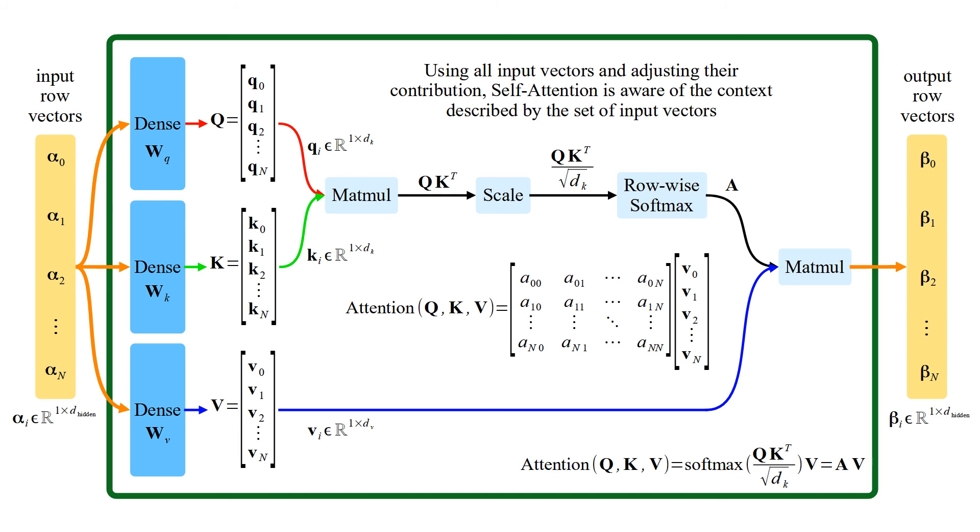Using all input vectors and adjusting their contribution, self-attention is aware of the context described by the set of input vectors. While combining value vectors for one output, value vector of corresponding input moves towards value vectors of other inputs. This is the effect of contextual information.